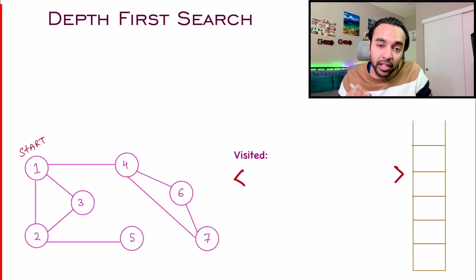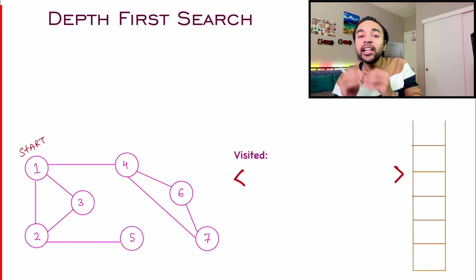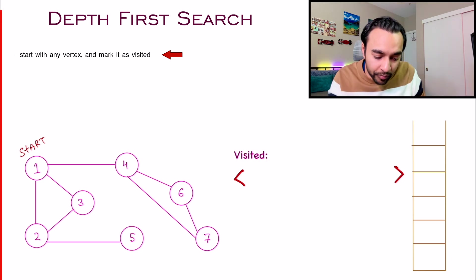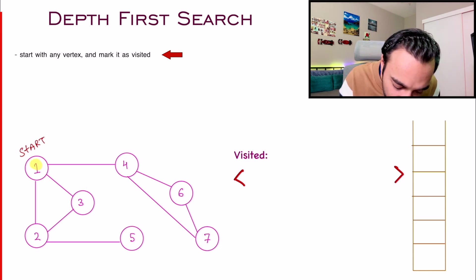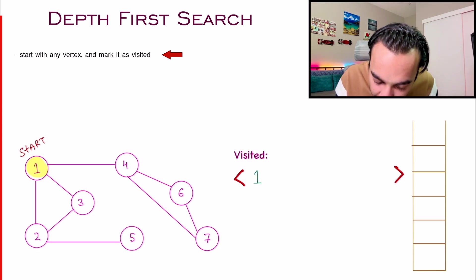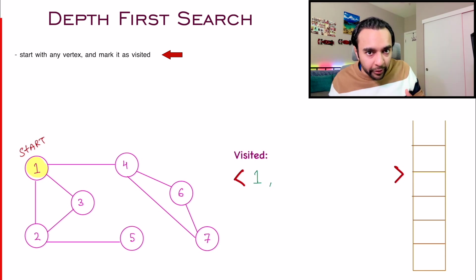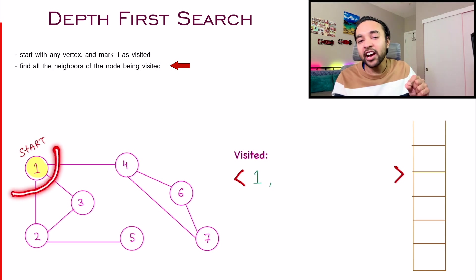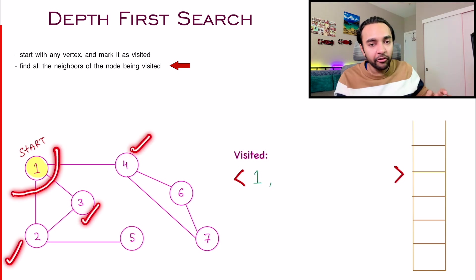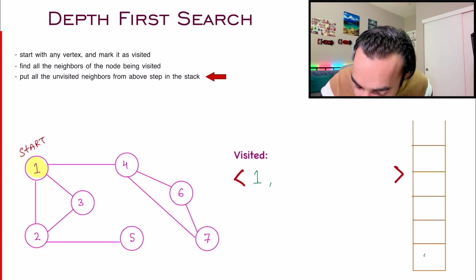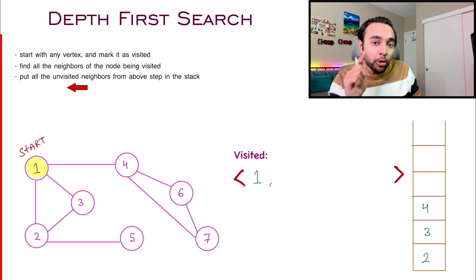To start your traversal, you need a starting point. In your function you pass in any vertex you want to start with — let's say node number one. So you add this node to your visited set. To move ahead, the next step is to find out what neighbors this node has. Currently, this node has three neighbors: two, three, and four. So you put all of these nodes in your stack. That is how you visited one node.